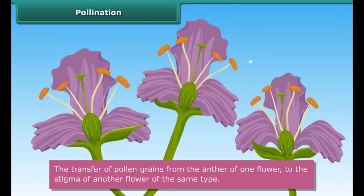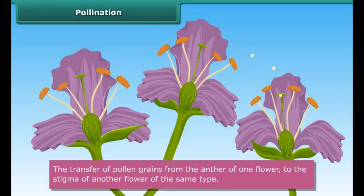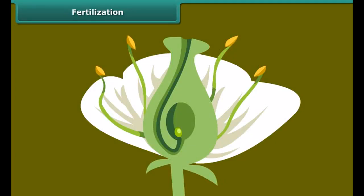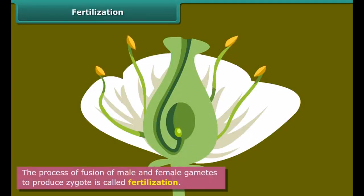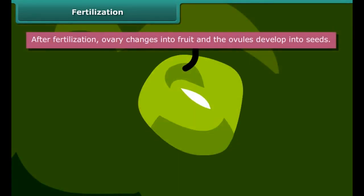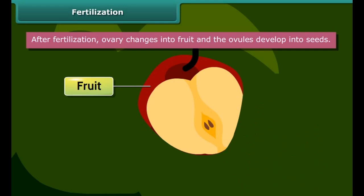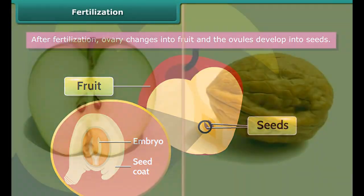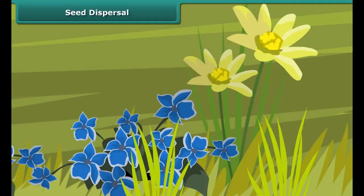Pollination. You must have seen honeybees sitting on a flower. Insects carry away pollen grains on their bodies — they are the pollinating agents. The transfer of pollen grains from the anther to the stigma of a flower is called pollination. The transfer of pollen grains from the anther to the stigma of the same flower, or the stigma of another flower on the same plant, is called self-pollination. The transfer of pollen grains from the anther of one flower to the stigma of another flower of the same type is known as cross-pollination.